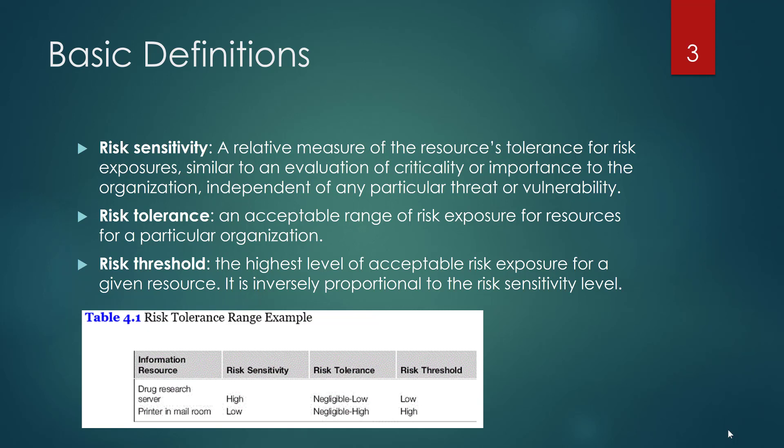Risk tolerance is going to be the acceptable range of risk exposure — whether it's low, medium, or high — associated with a particular resource and a particular organization. Risk threshold is going to be the highest level of exposure for a given resource, and it's going to be inversely proportional to risk sensitivity, as you can see in the chart. So if the drug research server has high risk sensitivity, the risk threshold is going to be low. If a printer in a mail room has low risk sensitivity, the risk threshold is high — meaning we can take a lot of risk associated with that printer.